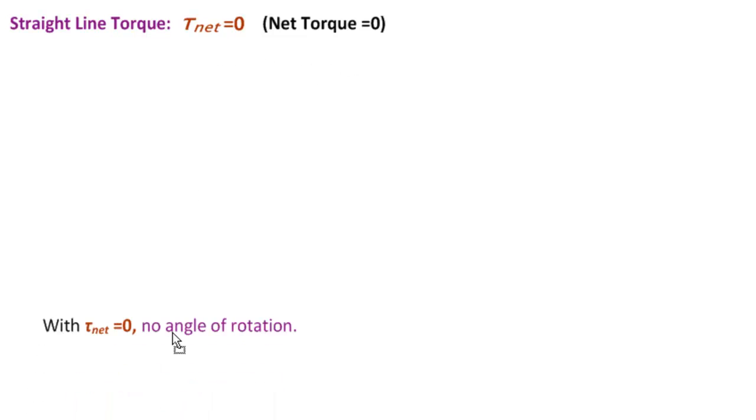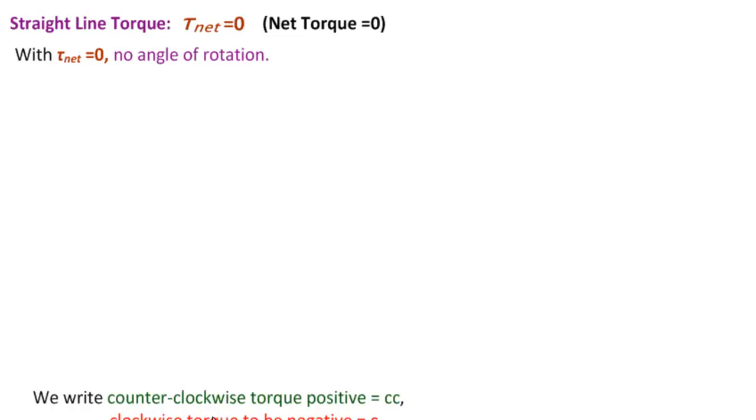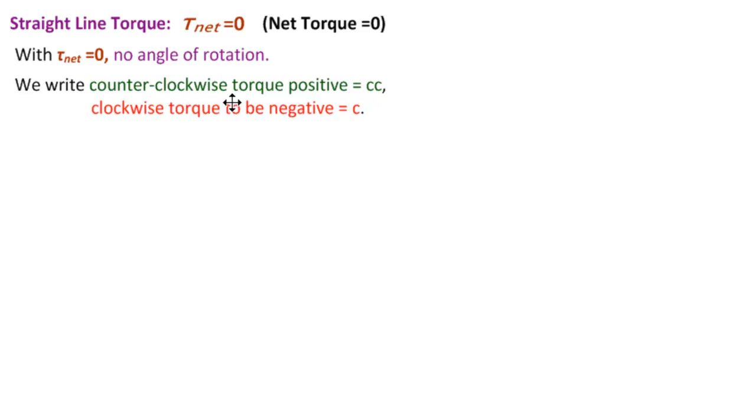The idea with straight-line torque and T-net equal to zero is that we're not concerned about an angle of rotation. But we still need to know which torques go in which direction. So we will write counterclockwise torque as a positive number, like an angle, and clockwise torque as negative. It doesn't matter as long as you're consistent.